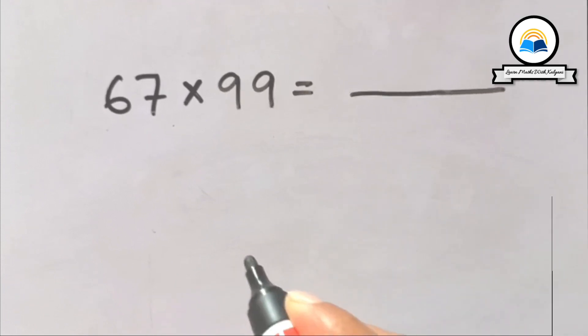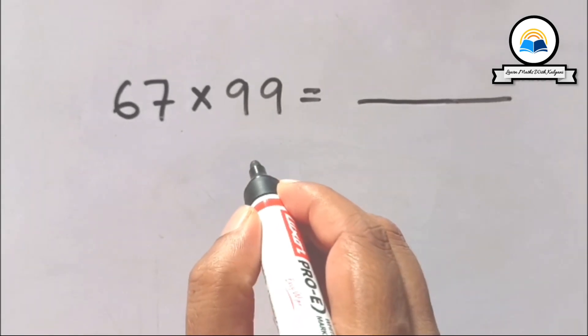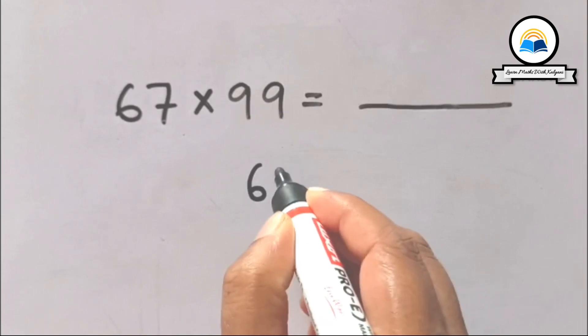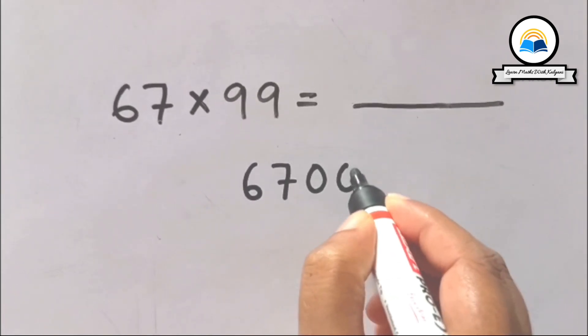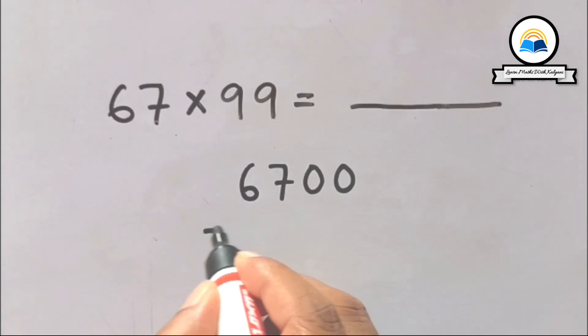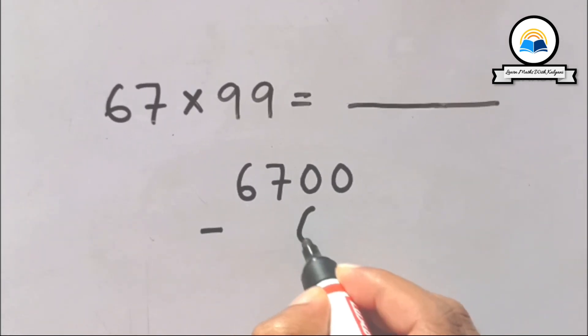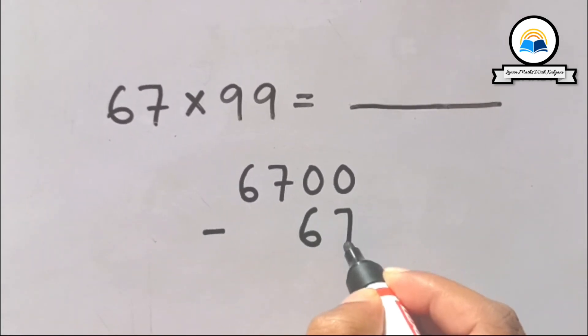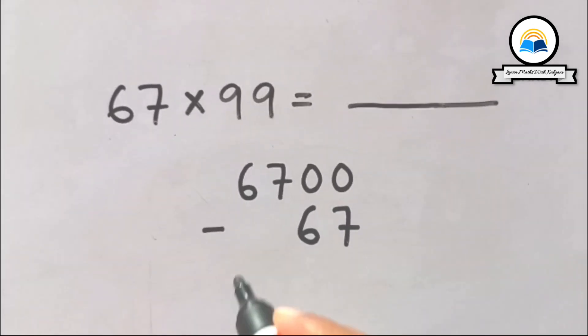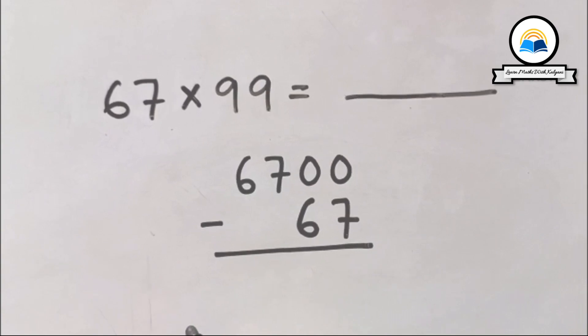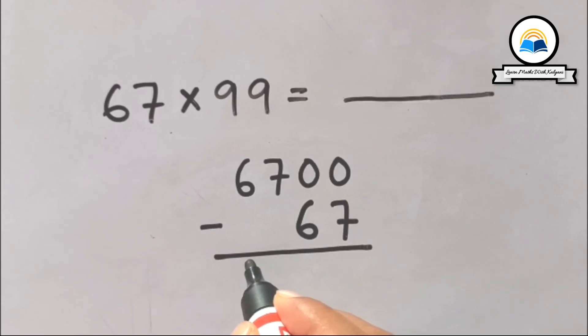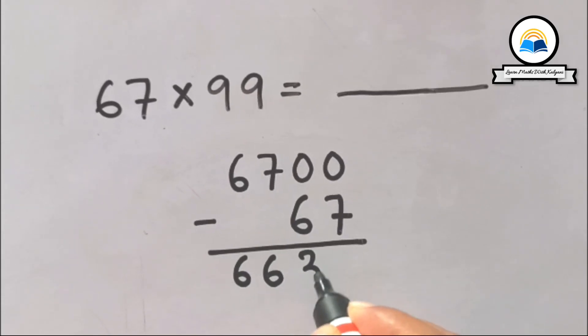Let's do the same examples once again. 67 times 99: 99 has two digits, so add two zeros to the extreme right of 67. It is 6700. Now subtract 67 from 6700: 6700 minus 67 equals 6633. So the answer is 6633.